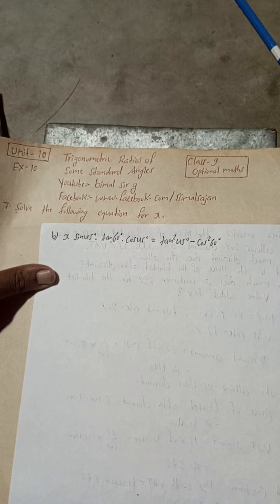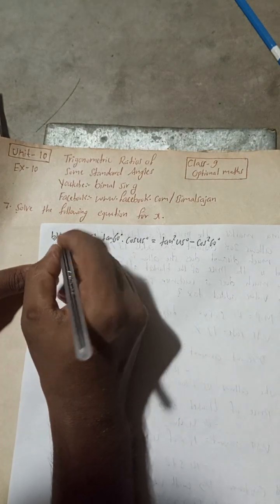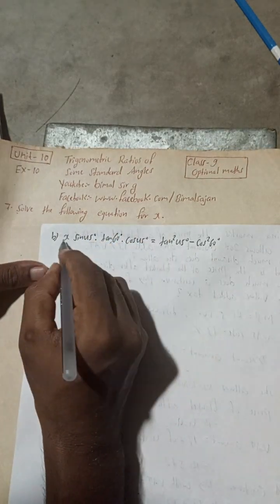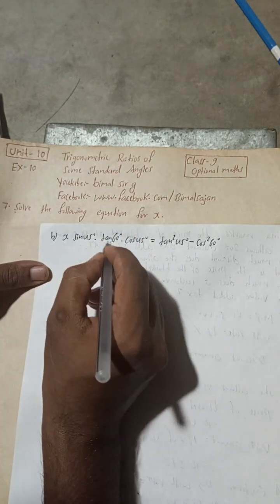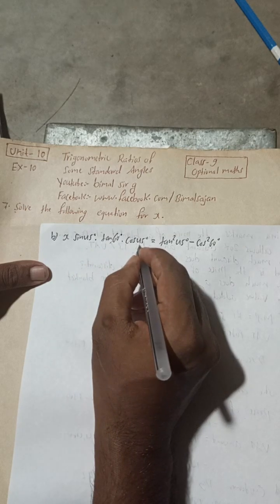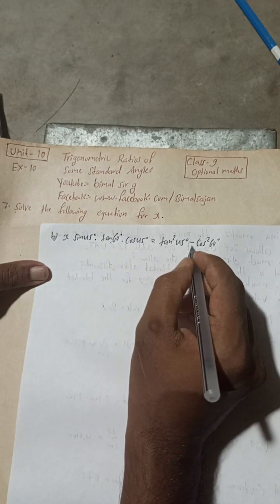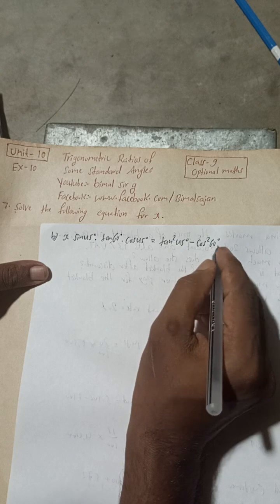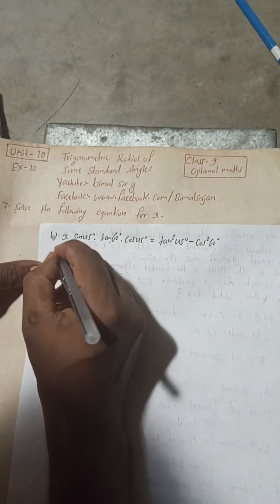So now let's begin this solution. Here we solve the following equation for x: x sin 45 degree into tan 60 degree into cos 45 degree is equal to tan square 45 degree minus cos square 60 degree.